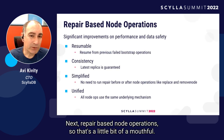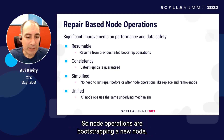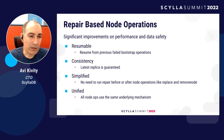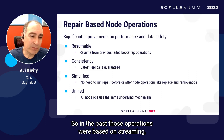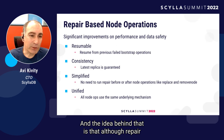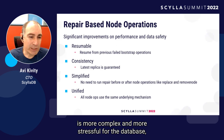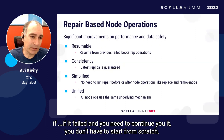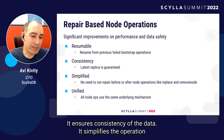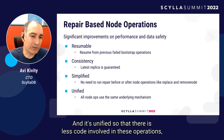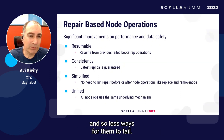Next, repair-based node operations. Node operations are bootstrapping a new node, decommissioning a node, rebuilding a node that has lost its data, and similar. In the past, those operations were based on streaming — moving data from one node to another. The idea behind the new approach is that although repair is more complex and more stressful for the database, it is less stressful for operators because you can resume it if it failed without starting from scratch. It ensures data consistency, simplifies operation because you no longer need to run repair at a specified point, and it's unified so there is less code involved and fewer ways for things to fail.